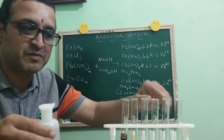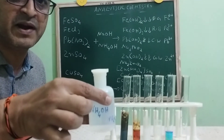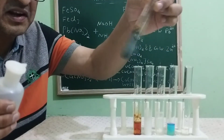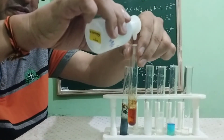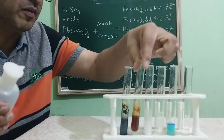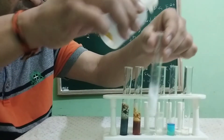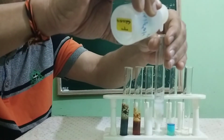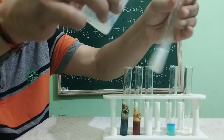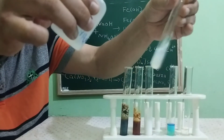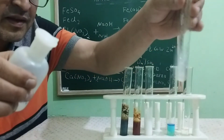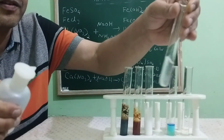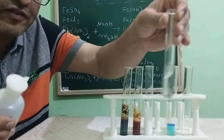Now we have to check whether all these precipitates are soluble in excess of ammonium hydroxide or not. Adding a little more ammonium hydroxide to the dirty green precipitate — it is insoluble. The reddish brown precipitate — that is also insoluble. The chalky white precipitate — that is also insoluble in excess of ammonium hydroxide. Let me try with the gelatinous white precipitate — it is disappearing! The precipitate dissolved completely and formed a clear solution.